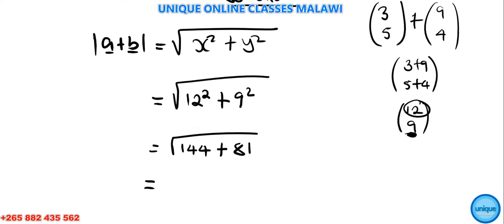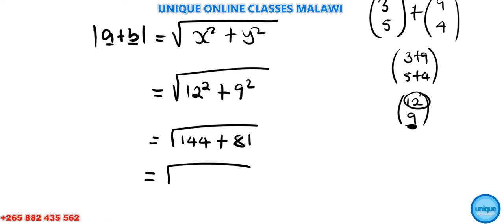12² is 144, and 9² is 81. 144 + 81 equals 225, and the square root of 225 is 15.